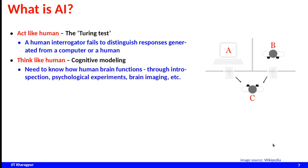A second school of thought is that the system should think like a human being, which mostly depends on cognitive modeling. If you expect your intelligent system to think like a human, you need to understand how the human brain functions — through introspection, psychological experiments, brain imaging, and other processes. If you can model a system in that manner and replicate it, it can think like a human being.